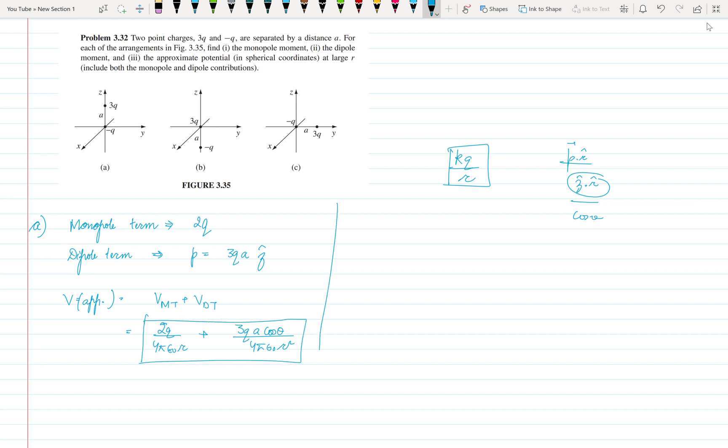Now let us calculate for part B. The monopole term again it is 2Q. The dipole moment term: it is P into the distance from the charge from the center. So it is given by minus QA and the direction is minus Z cap. So it is QA Z cap.